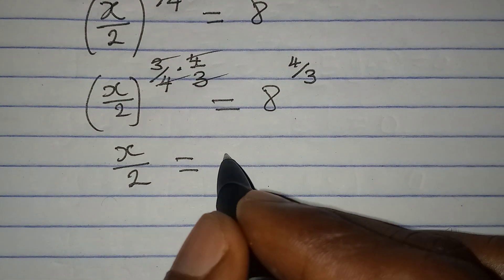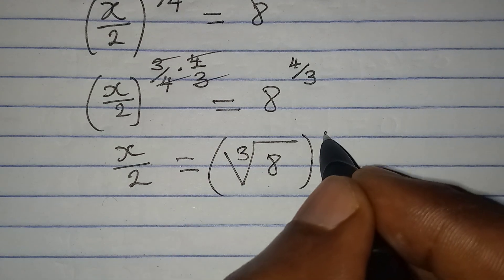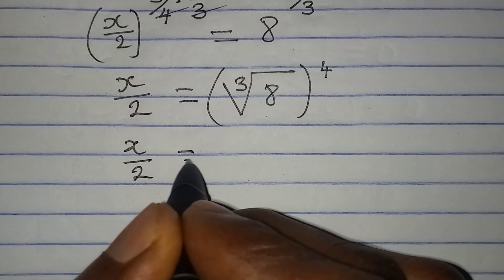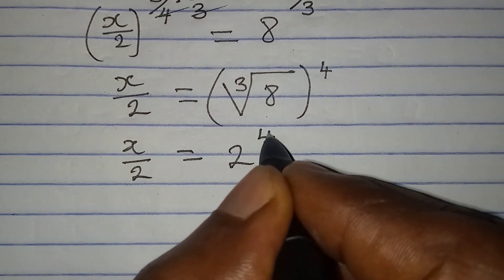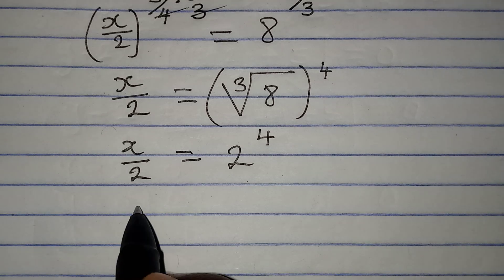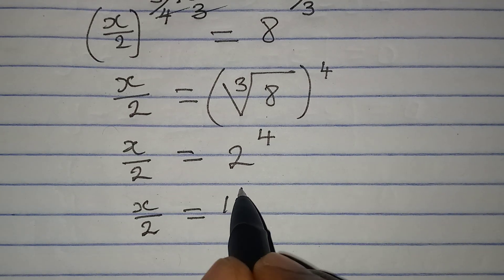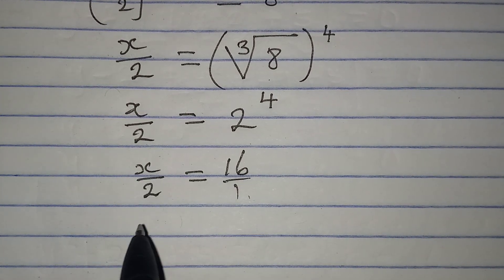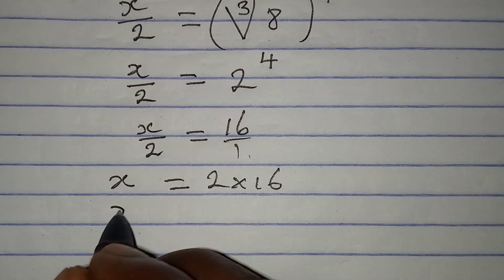The 4 over 3 cancels on the left, giving x over 2 equal to 8 to the power of 4 over 3. This is the same as the cube root of 8, everything to the power of 4. So we have x over 2 equal to the cube root of 8 to the power of 4. The cube root of 8 is 2, because 2 cubed equals 8. So x over 2 equals 2 to the power of 4, which is 16.